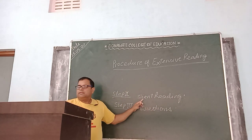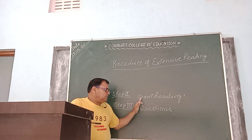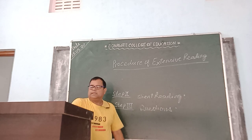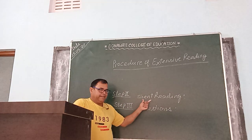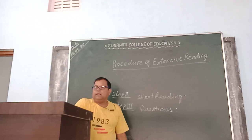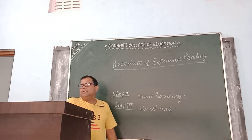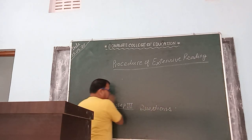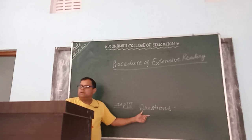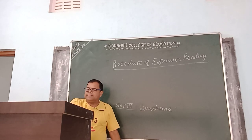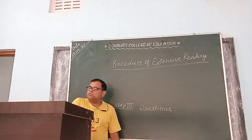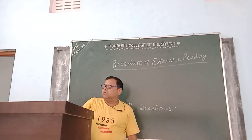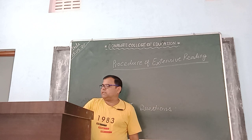The second step is silent reading. Silent reading means the student reads silently but quickly. In silent reading, the student should pay much more attention to the reading. The teacher then asks a few questions to judge if the students have understood the meaning or not.